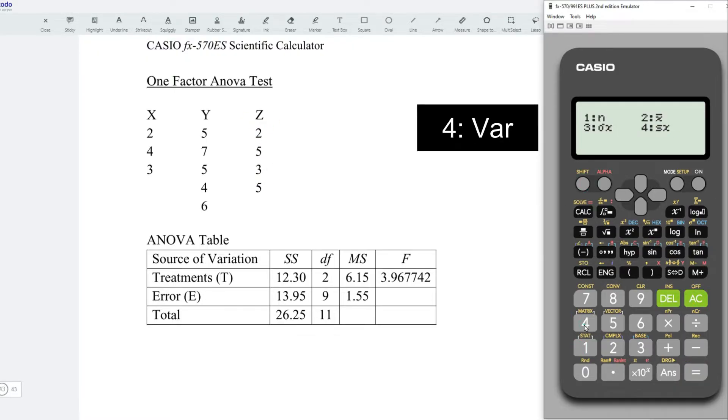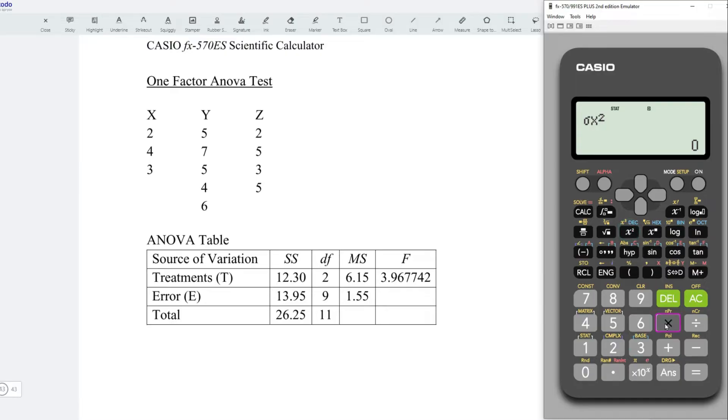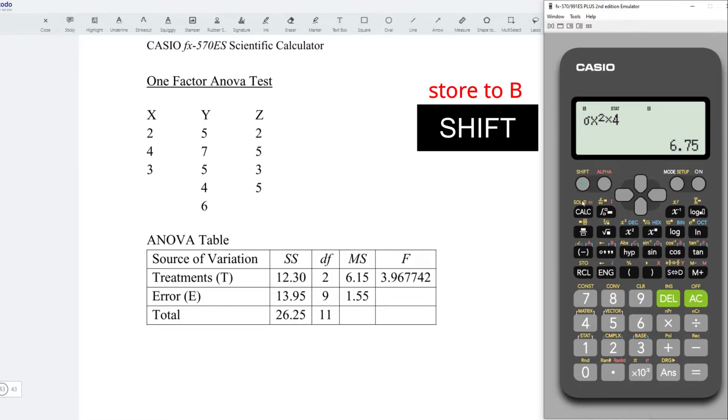Shift 1, variation, 3, square. All together we have 4 observations. Press on equal. And now, followed by shift, recall, store to C.